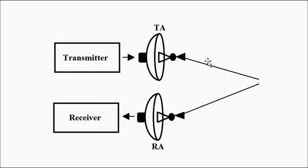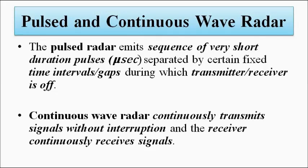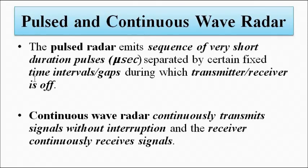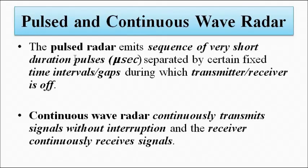The next way of classifying a radar is pulsed versus continuous wave radar. Pulsed radar makes use of very short radio frequency pulses — square wave signals — of duration in the order of microseconds. There is a certain time interval left intentionally between the transmission of each pulse, called the gap or reception time. During that period, the transmitter is off and the receiver is on. In continuous wave radar, on the other hand, signals are continuously transmitted without interruption, whereas in pulsed radar there is a gap time interval.